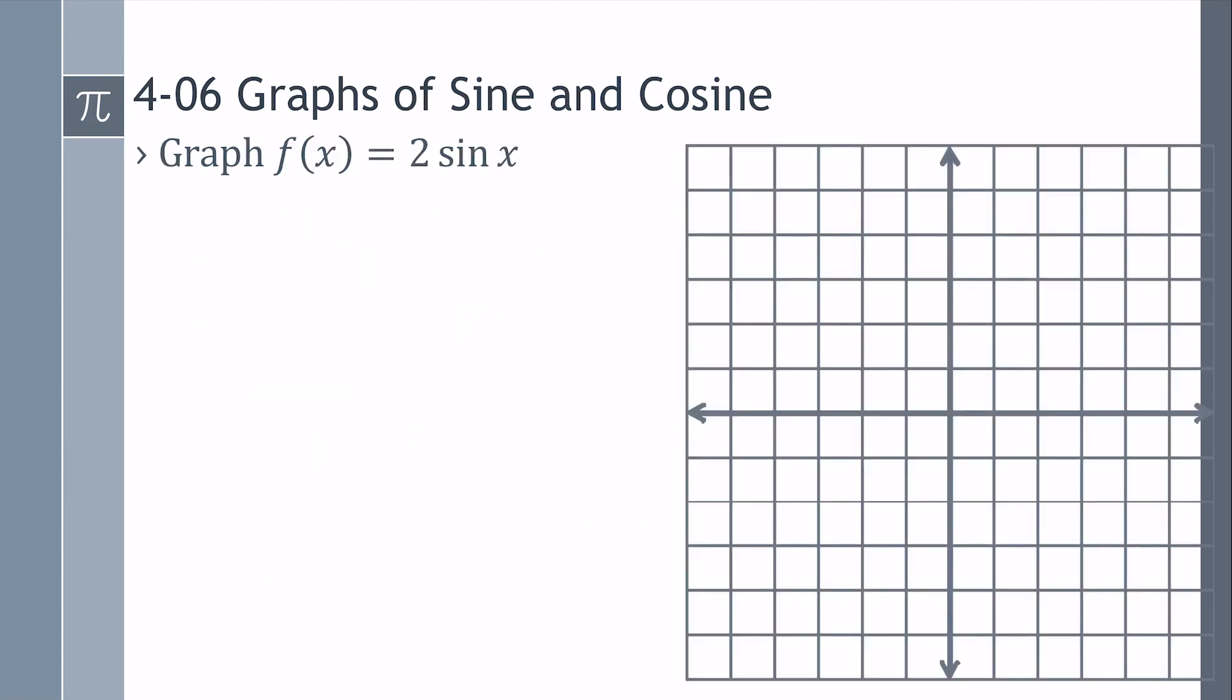Two times sine of X. Well, this looks like sine, except we have an A, so our amplitude is two. So I decide how we're going to do this graph. Because of the way the key points work, and we're doing sine, sine starts at zero, so we'll start there at zero, zero.